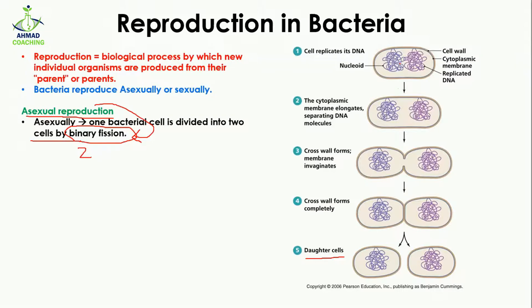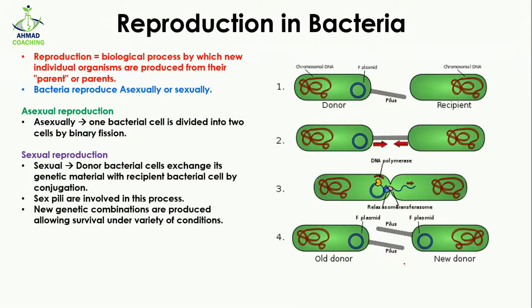This is the process of binary fission — 'binary' means two, 'fission' means split, so one cell is split into two daughter cells. Then comes sexual reproduction. In sexual reproduction, the donor bacteria cell exchanges its genetic material with the recipient bacterial cell by the process of conjugation.